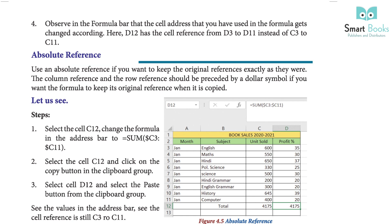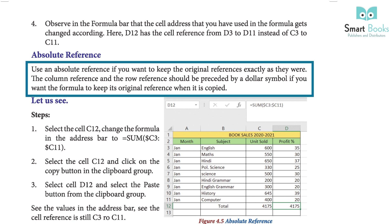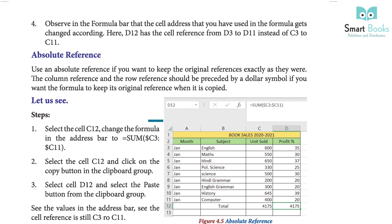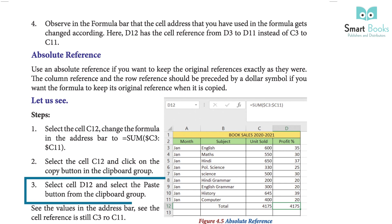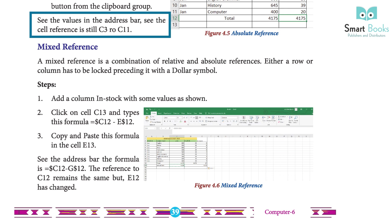Absolute reference: use an absolute reference if you want to keep the original reference exactly as it was. The column and row reference should each be preceded by a dollar symbol so the formula keeps its original reference when copied. Step 1 — select cell C12 and change the formula in the address bar to =SUM($C$3:$C$11). Step 2 — copy cell C12. Step 3 — select cell D12 and paste. Observe that the cell reference remains $C$3:$C$11.